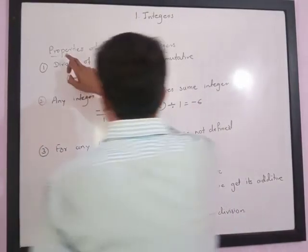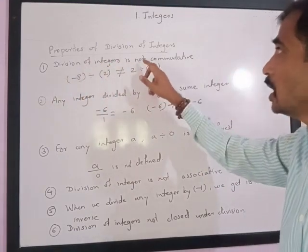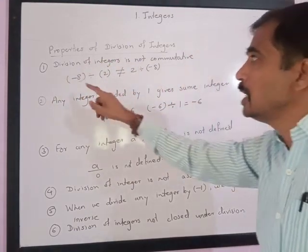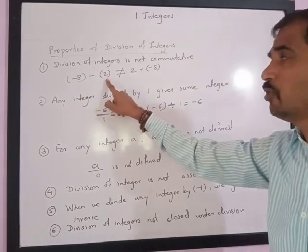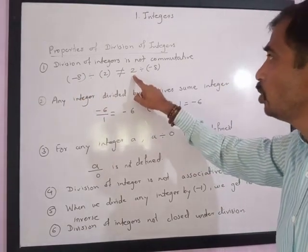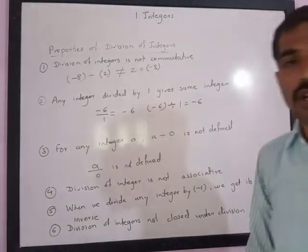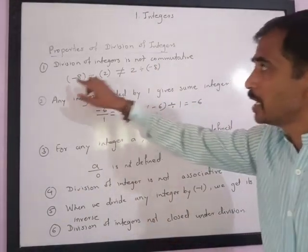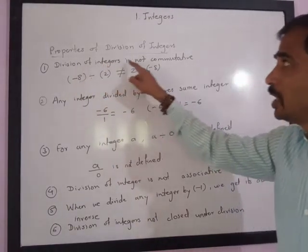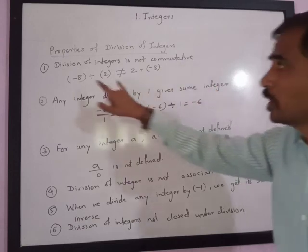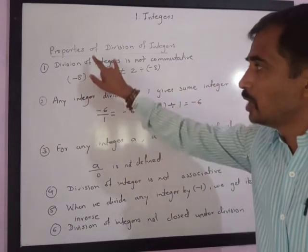The properties of division of integers: the first property is that division of integers is not commutative. For example, negative 8 divided by 2 gives negative 4, but 2 divided by negative 8 gives negative 0.25. The answers are different, so we cannot change the sequence of division. Division of integers is not commutative.